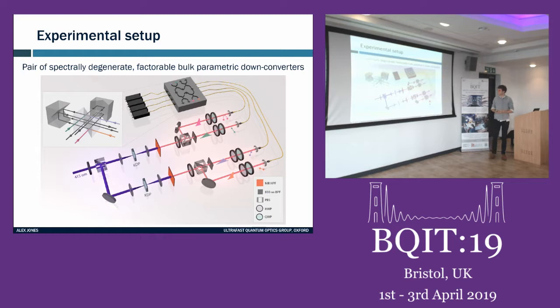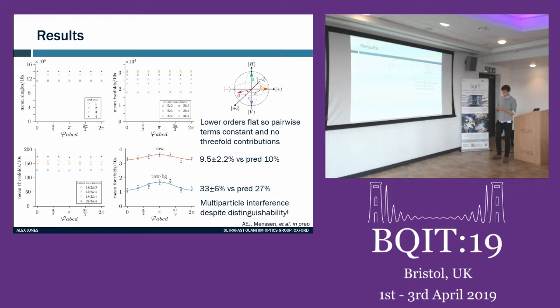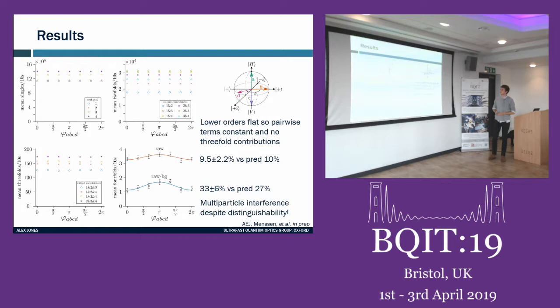These are our results. The first plot shows singles counts out of the device across four output channels as a function of the phase parameter tuned by rotating around the equator — all basically flat with less than half a percent variation. The top-right plot shows twofold coincidences of the outputs across six different pairs, and again these are flat as a function of phase, confirming that pairwise distinguishability is kept constant.